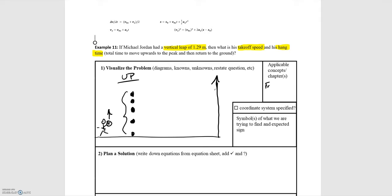This is a freefall type problem since we're dealing with that hang time. The first thing we're going to do is define a coordinate system, so I'm going to call the upwards direction the positive y direction.